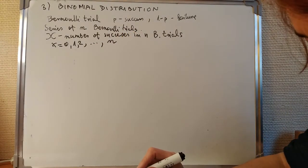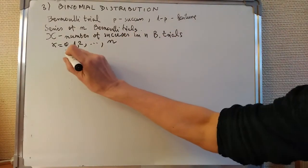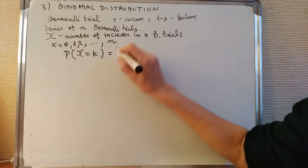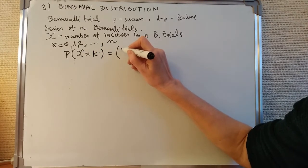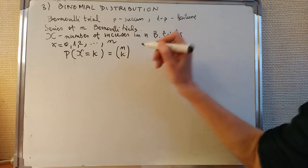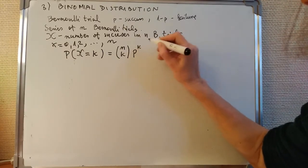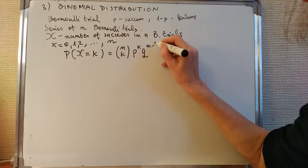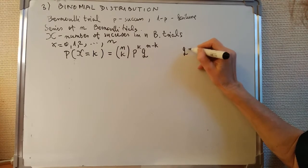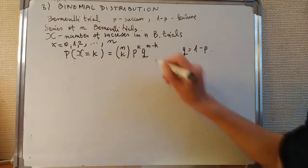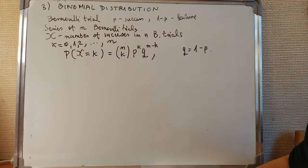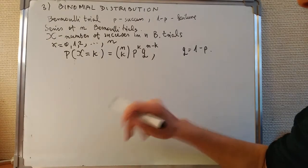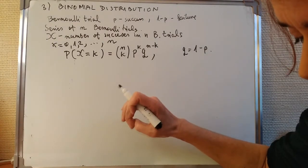What's the probability that the random variable equals some small k? It is: n choose k, times p to the power k, times q to the power n minus k, where q is 1 minus p. Here, n choose k is the Newton symbol — we spoke about it at the beginning when we covered combinatorics.